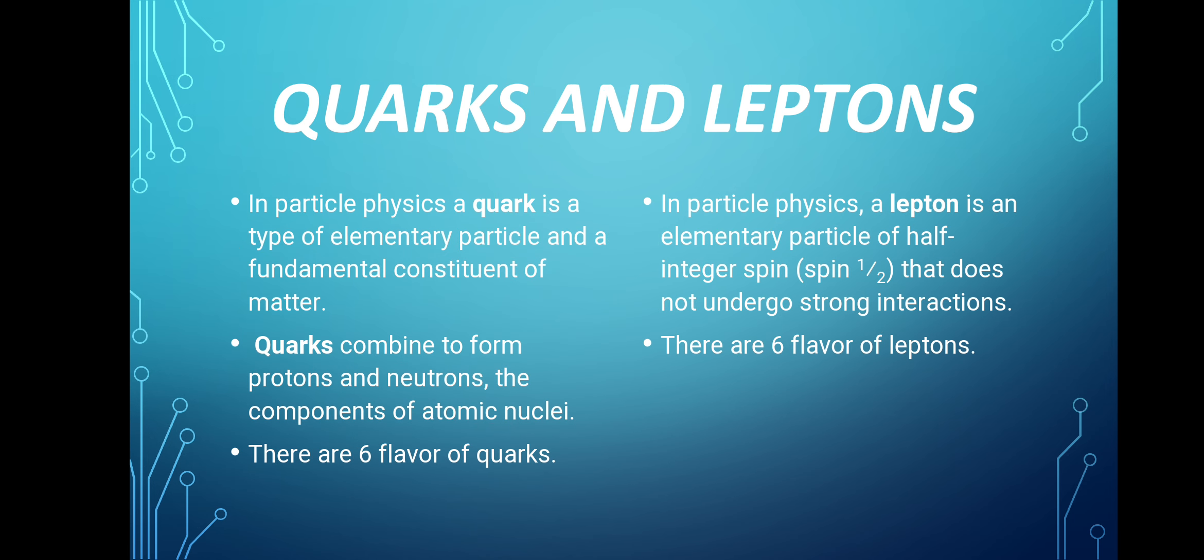What is quark and leptons? We said proton and neutron are made up of quarks. In particle physics, a quark is a type of elementary particle and a fundamental constituent of matter. They have 6 flavors or 6 types. Lepton is an elementary particle of half-integer spin which does not undergo strong interaction as they are not inside nucleus. Leptons also are of 6 flavors or 6 types.